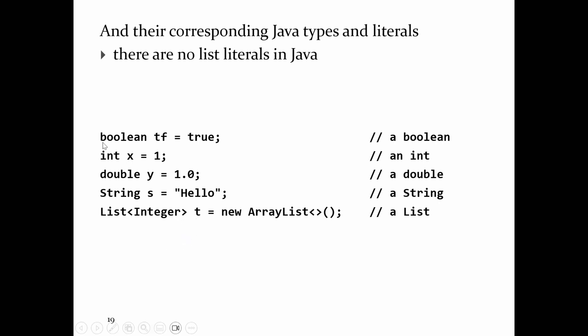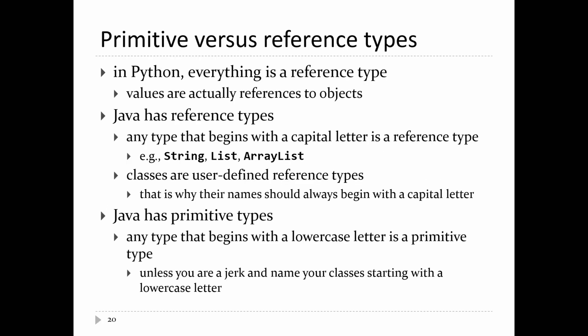You might wonder if there's something significant about the lowercase boolean and the uppercase String. The answer is yes. Java has two different types of values: what's called a primitive type and what's called a reference type. Python does not have this distinction — in Python, everything is a reference type, though they usually don't teach you this in introductory courses.